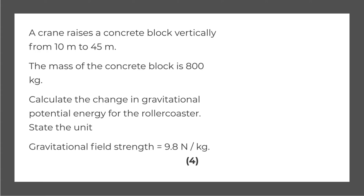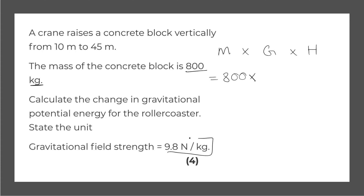Our final question: a crane raises a concrete block vertically from 10 meters to 45 meters. The mass of the concrete block is 800 kilograms. Calculate the change in gravitational potential energy, state the unit, and the gravitational field strength is 9.8 newtons per kg. Writing the equation: mass multiplied by gravitational field strength multiplied by height. The mass is 800 kilograms — in the correct unit — multiplied by 9.8 newtons per kg.